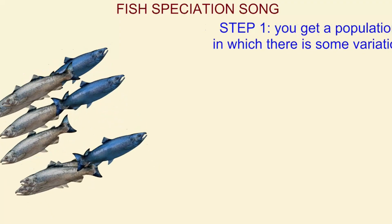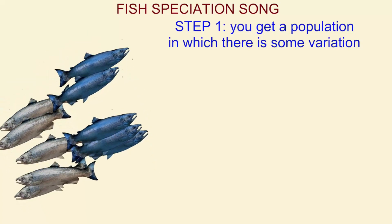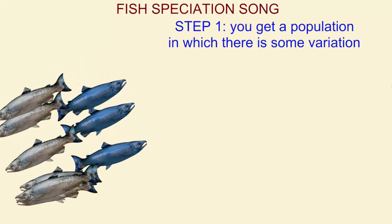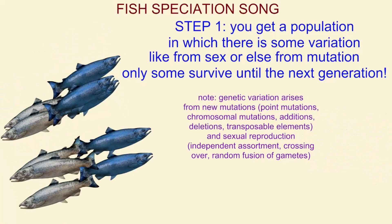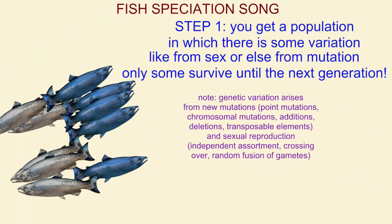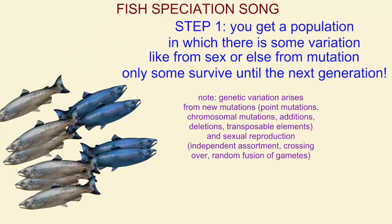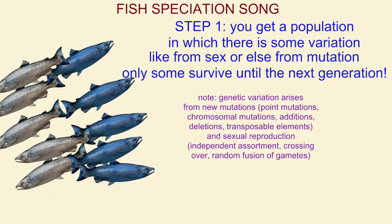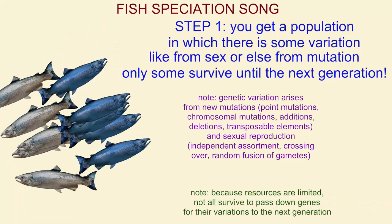Step one: you get a population in which there is some variation, like from sex or else from mutation, and only some survive to the next generation.